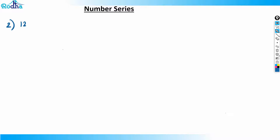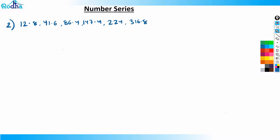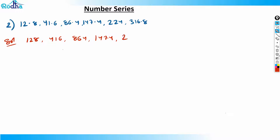Question 2: find the wrong number in the series 12.8, 41.6, 86.4, 147.4, 224, and 316.8. Since all numbers have decimals, multiply everything by 10 to remove the decimals: 128, 416, 864, 1474, 2240, and 3168.